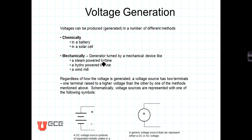Somehow you generate steam to turn a turbine, and that turbine, by turning electromagnets in magnetic fields, causes a charge separation that establishes a voltage. Regardless of how the voltage is generated, all voltage sources have two terminals, and the potential at one terminal will be higher than the voltage at the other. That voltage difference is the size of the voltage source.